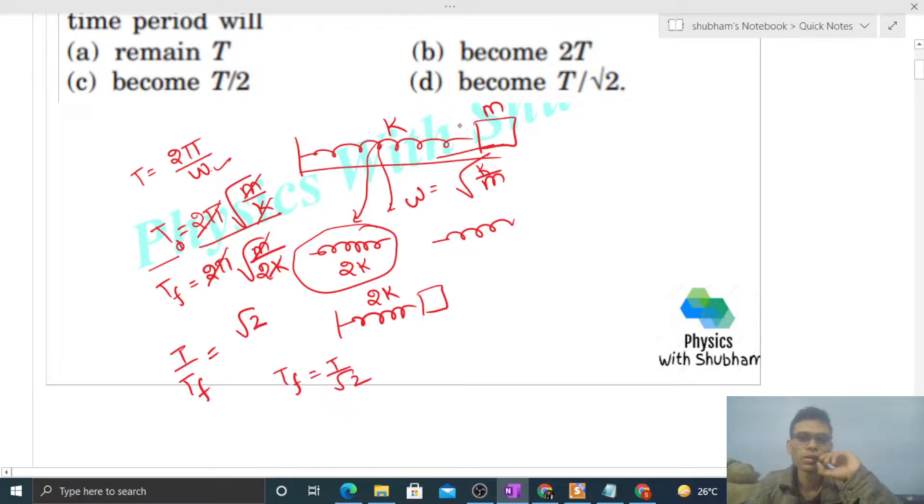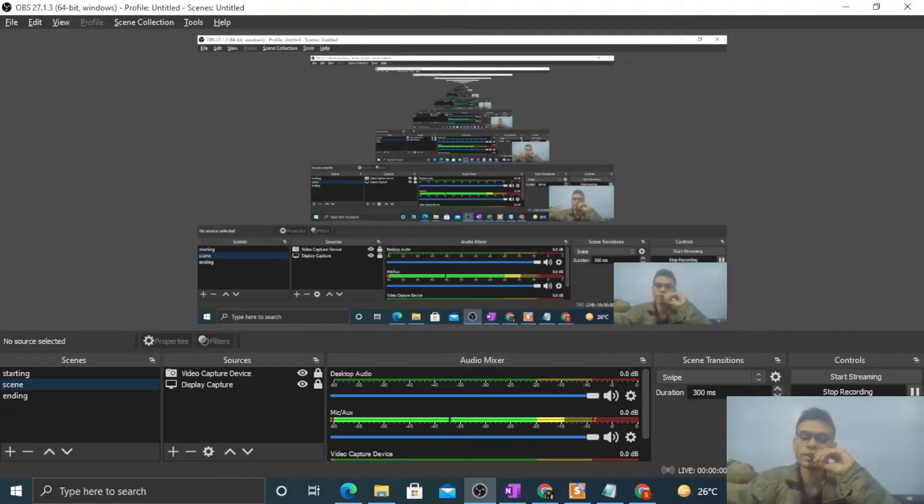So T final is T by root 2. So option d is correct. So I think you have understood. Let me know if you still have any confusion. Okay, let's keep working hard. Best of luck.